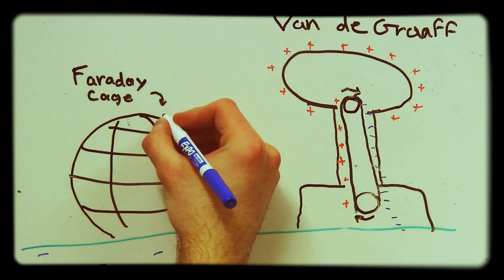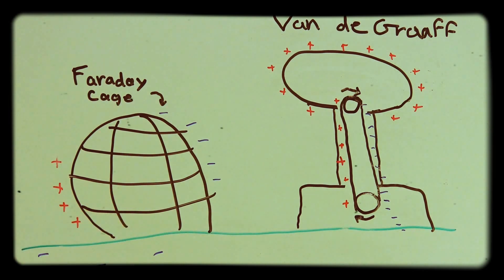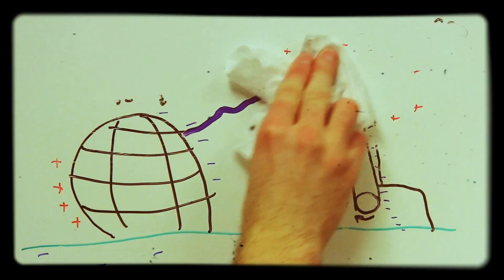Remember the experiment with the styrofoam balls? It showed us that like charges want to be far away from each other. So when a Faraday cage is charged, the charges distribute across the whole surface. After that, the charges on either side of the cage both exert the same force on the contents of the cage, but from opposite directions. This means that they cancel, and everything inside the cage is unaffected.